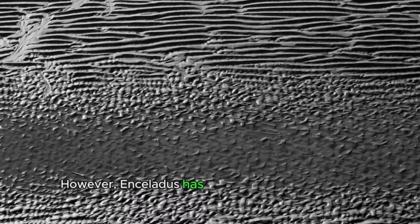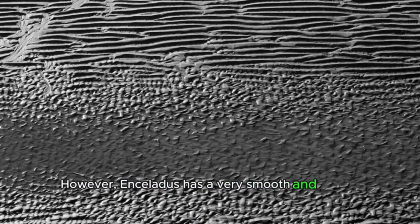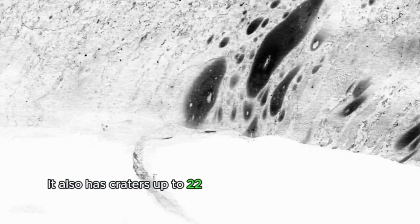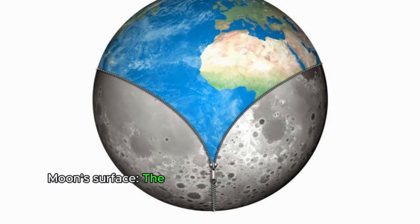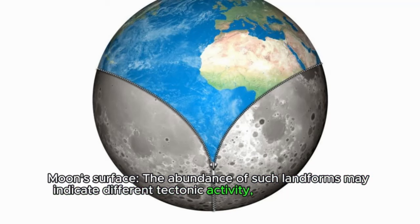However, Enceladus has a very smooth and young surface, unlike Mimas. It also has craters up to 22 miles on its surface, but very few. More dominated by depressions and ridges that can be seen almost all over the Moon's surface. The abundance of such landforms may indicate different tectonic activity, like an earthquake when tectonic plates compress.